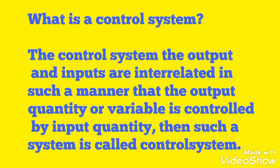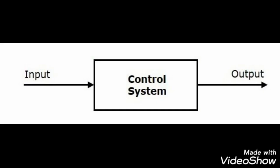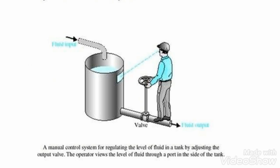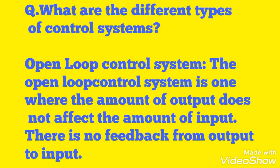Hello friends, today our topic is process control system. A control system is one where the output and input are interrelated such that the output quantity or variable is controlled by the input quantity. You can see a control system has one input and gives output according to the input. For example, we can control the water level of a tank with a control valve — this is called a control system.